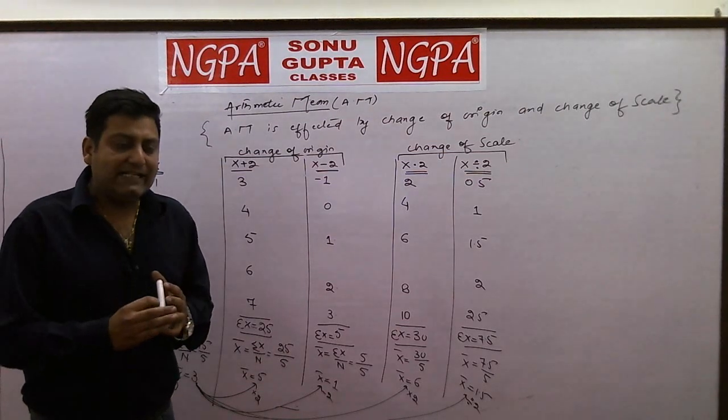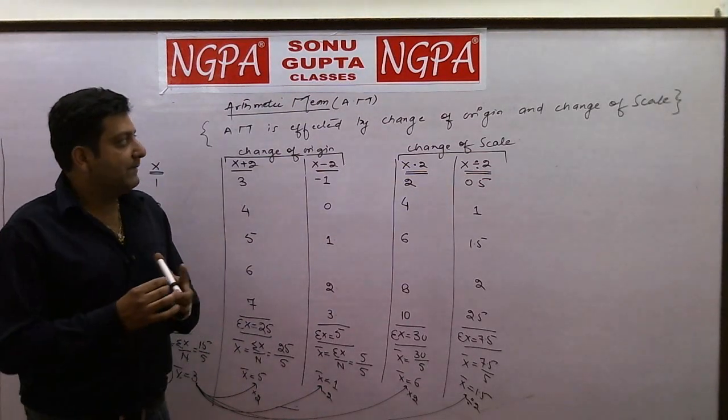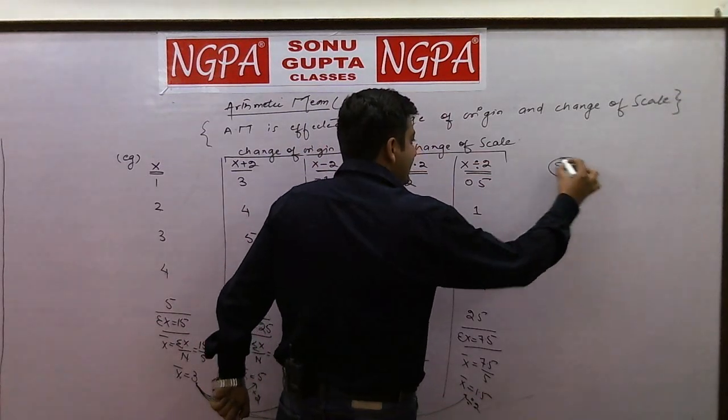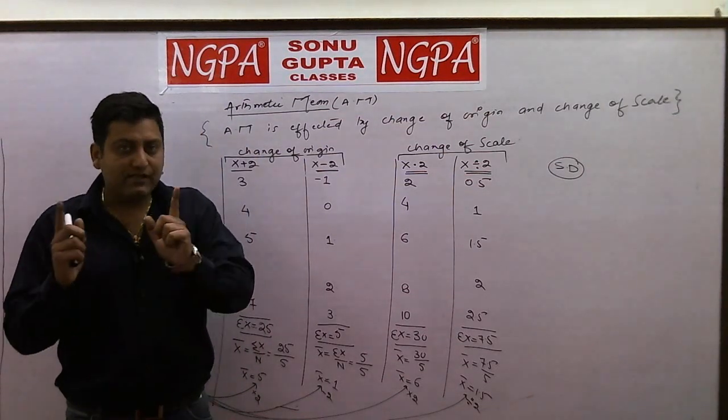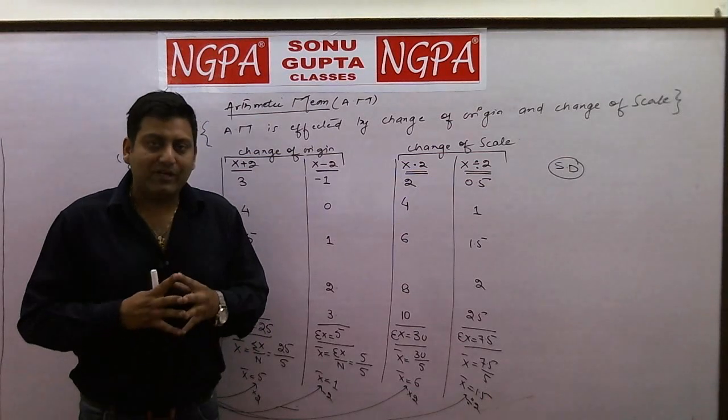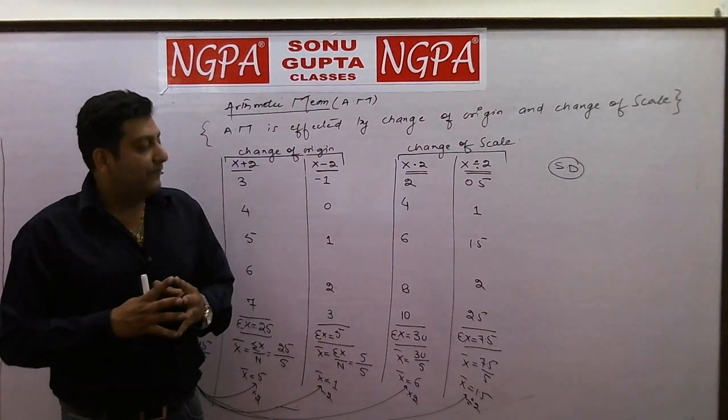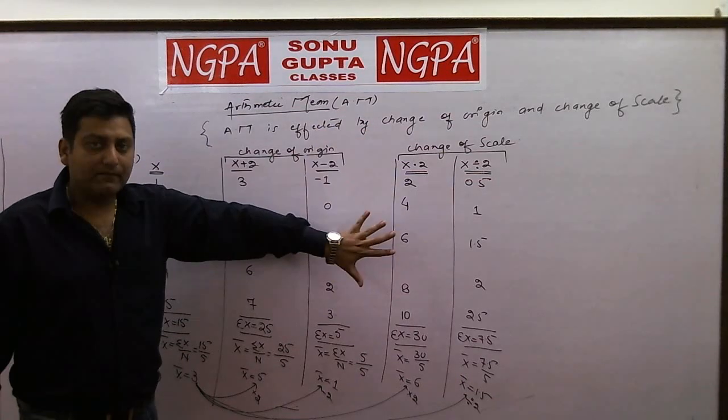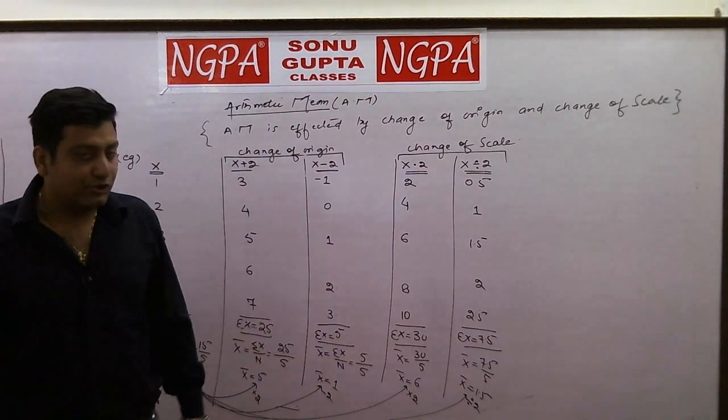So arithmetic mean is affected by change of origin and change of scale. Simple. Now let me briefly mention standard deviation. Standard deviation is not affected by change of origin but it is affected by change of scale. This means if you add or subtract something, standard deviation won't change. But if you multiply and divide, then the standard deviation will multiply and divide. I will discuss this topic in the next lecture. Today's topic is this property which we have learned - very important, very very important property in the context of CA CPT. Thank you for today.